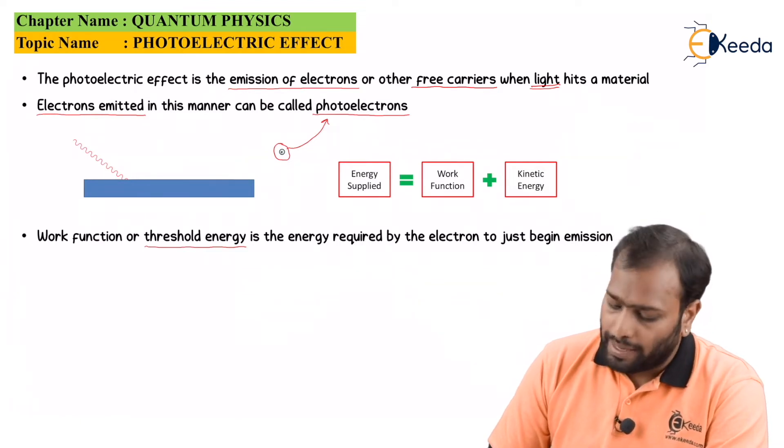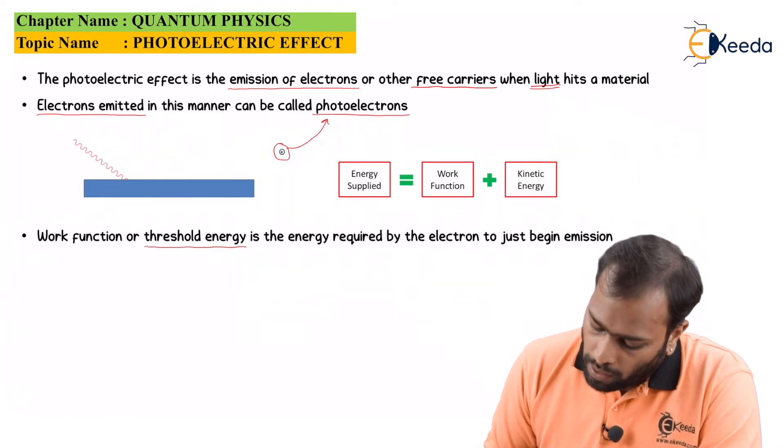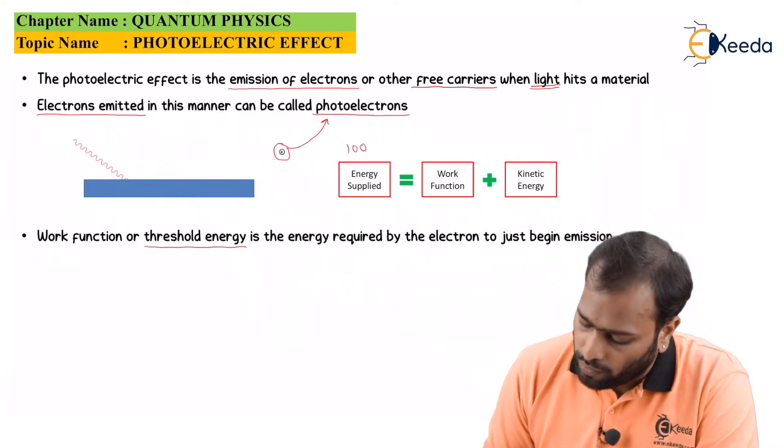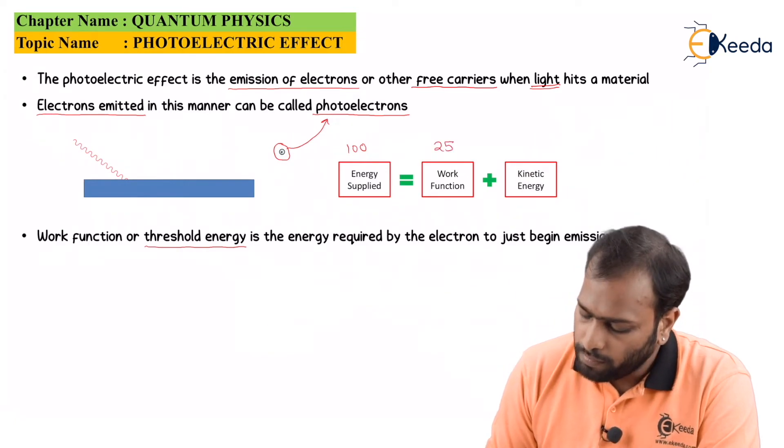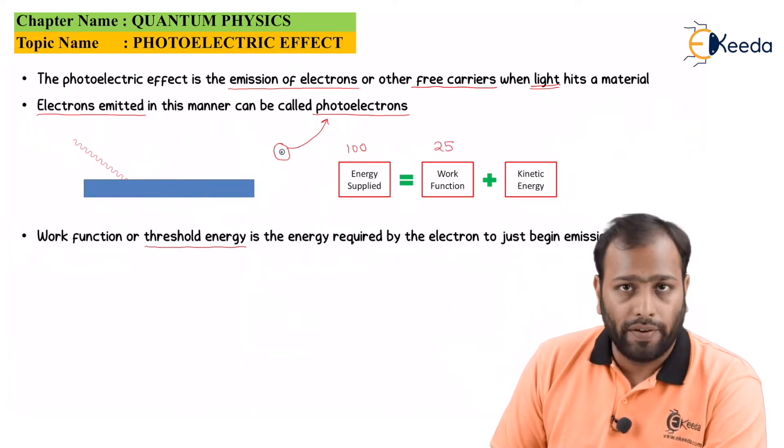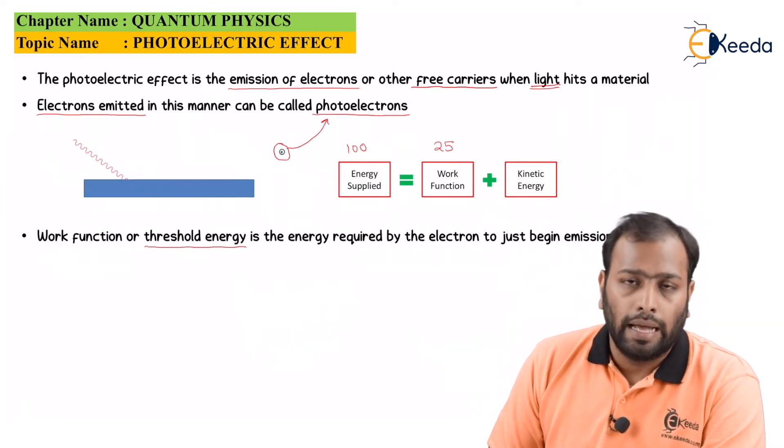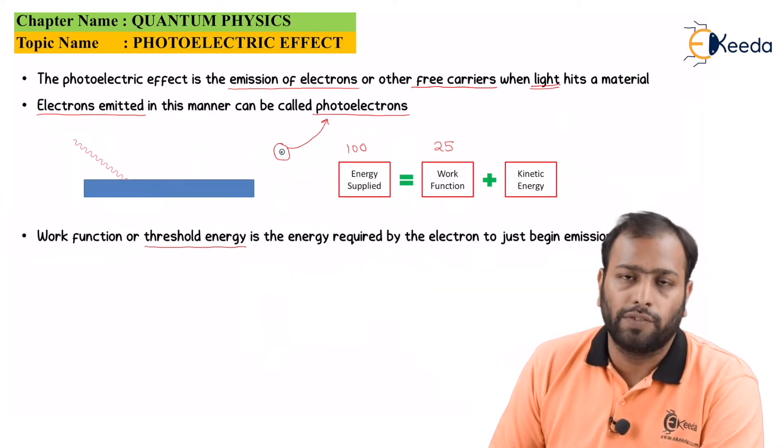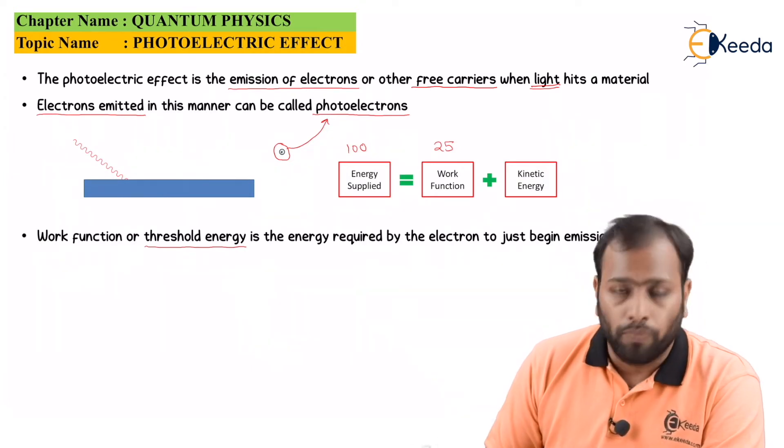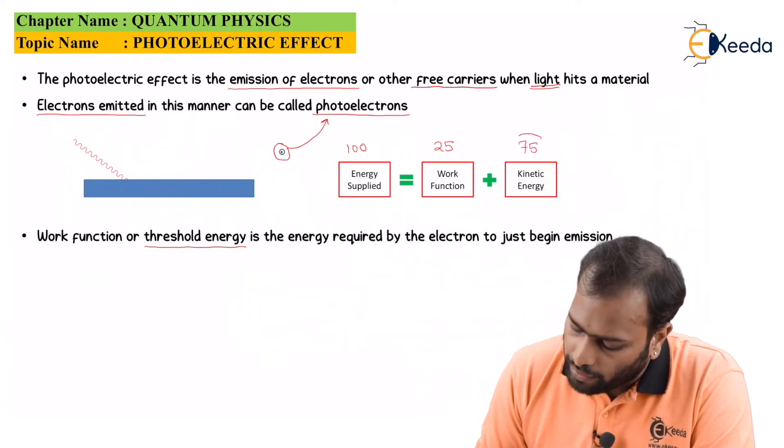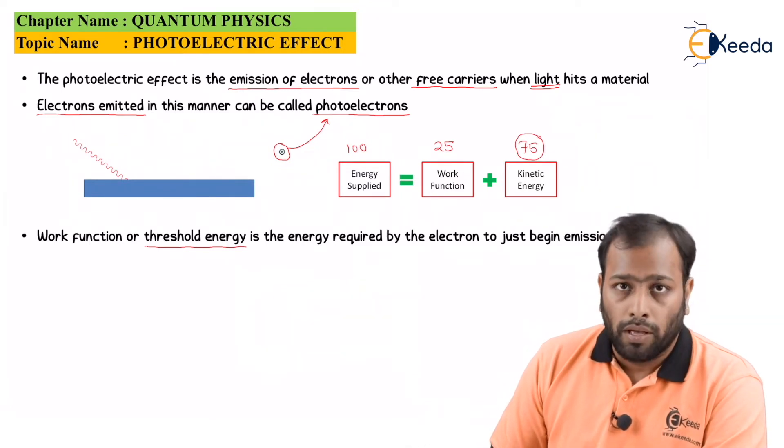Now, to put it in a simple way, let's take an example. Let's just suppose you have supplied 100 units of energy and the material has a work function of 25 units. So, out of 100, your 25 units of energy are purely wasted just to bring the electron to an emission position. Or you can say, this is the amount of energy that you will spend just for the electron to get on the surface so that now emission could begin. So for the rest 75 remaining energy, you will be only getting your kinetic energy.